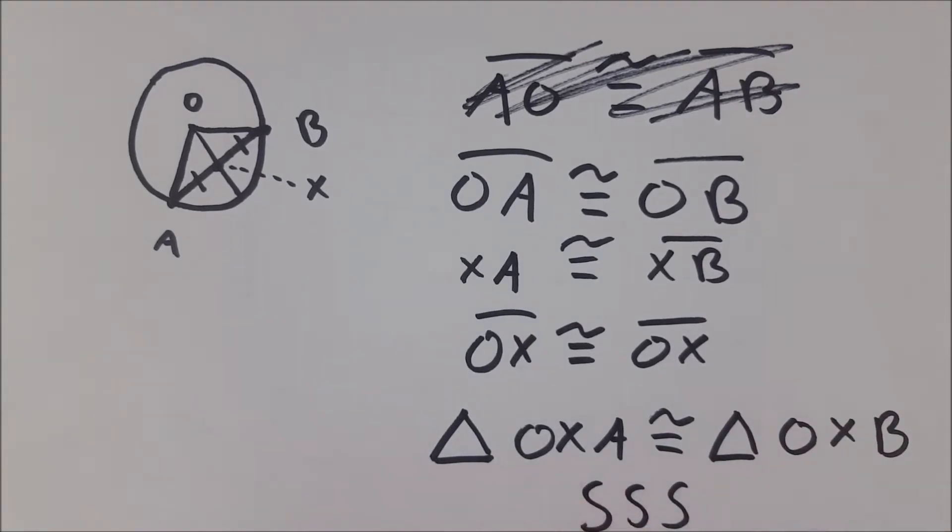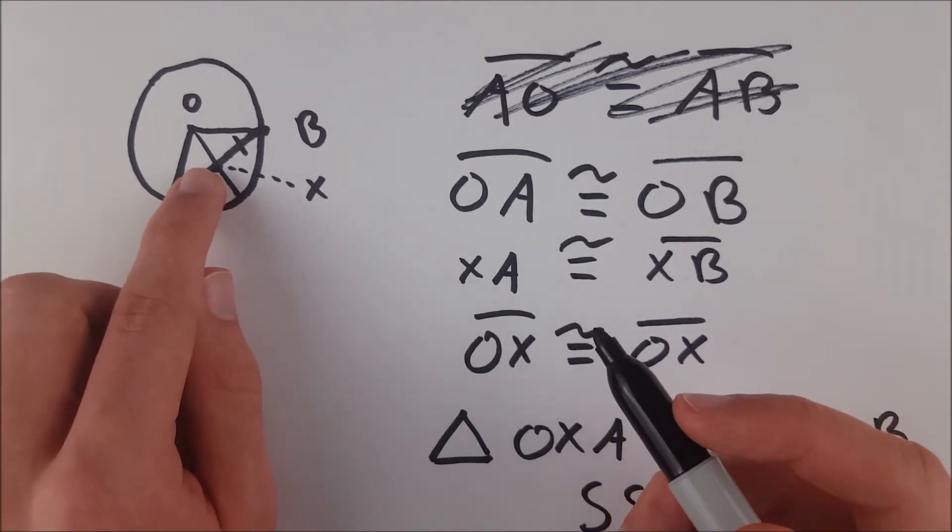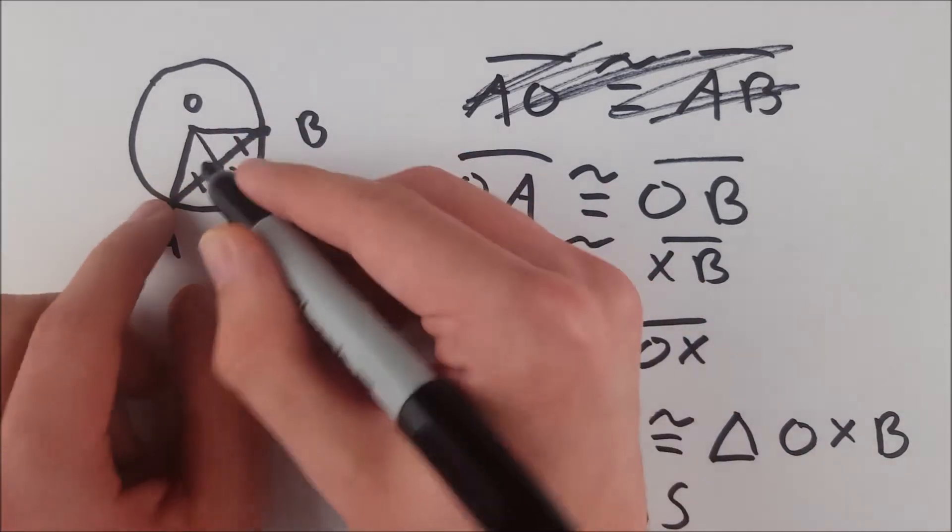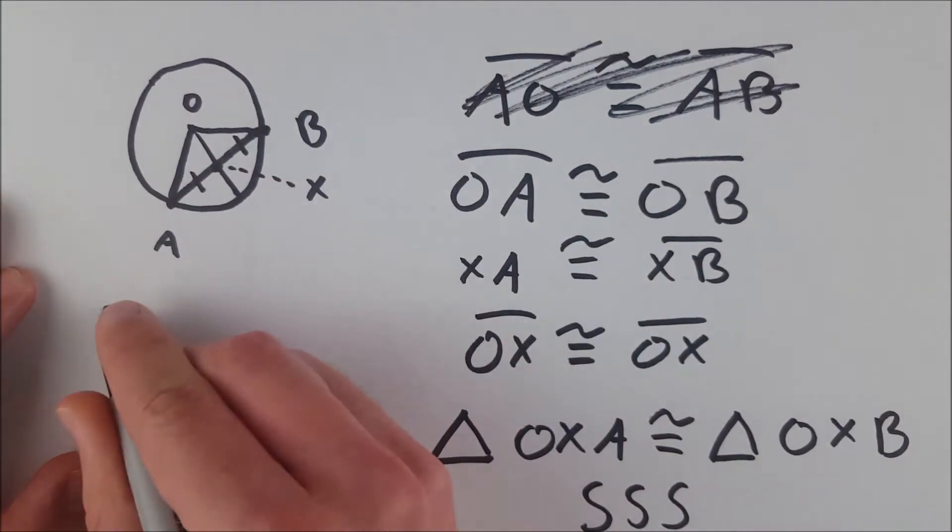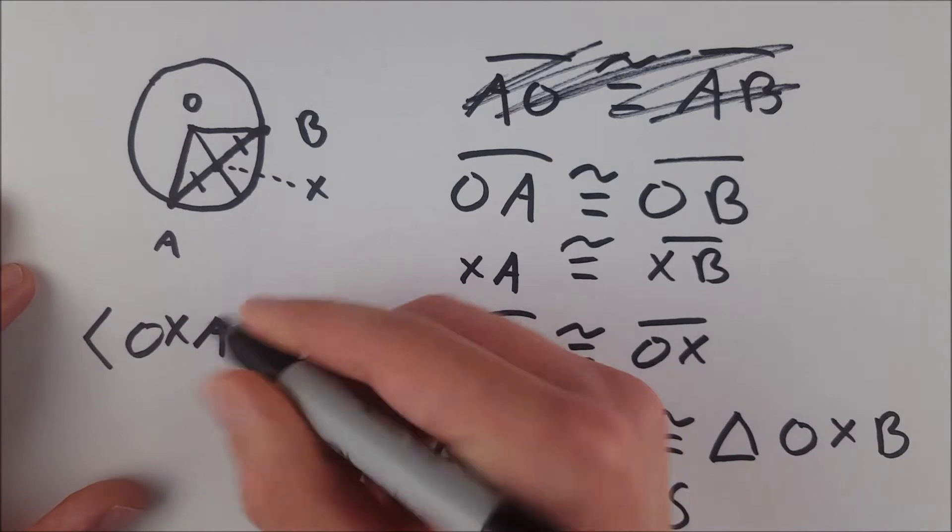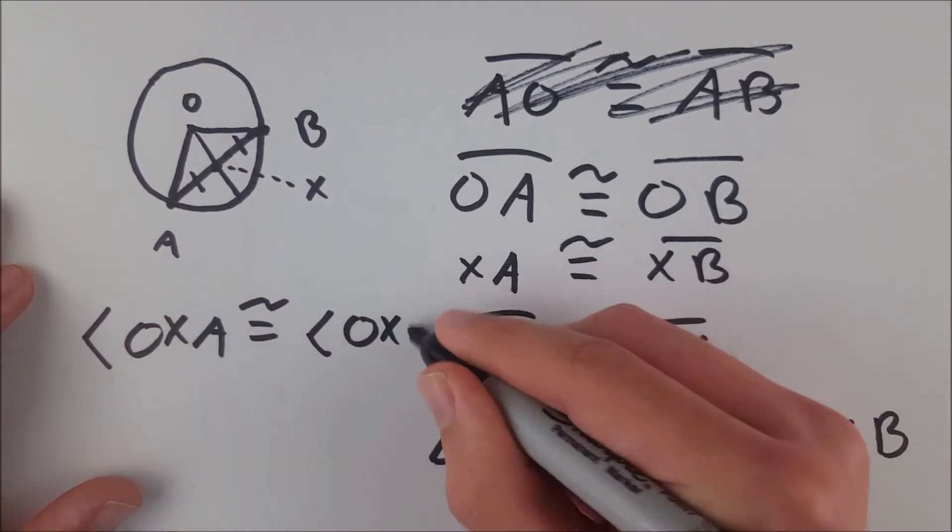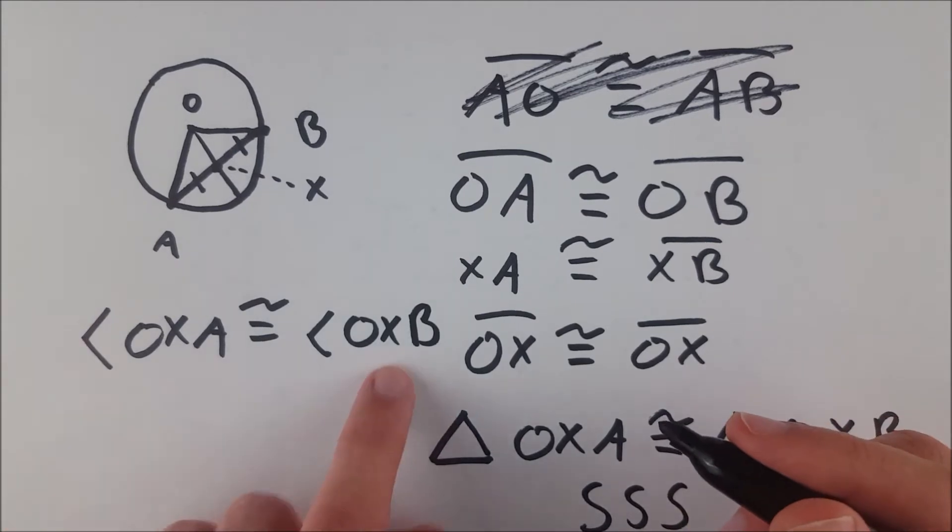So because of this, we know that this angle and this angle are congruent, because the triangles are congruent. So we'll get into this. Angle OXA is congruent to angle OXB. We know they're congruent.